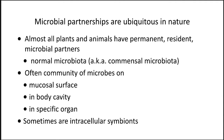Microbial partnerships are ubiquitous in nature. Almost all plants and animals have permanent resident microbial partners. We call this the normal microbiota, but you may also hear the term commensal microbiota. I think normal microbiota is better because commensal implies that there's no benefit to the host, and that's certainly not true. Often, the community of microbes will be found on mucosal surfaces, in body cavities, but can also be found in specific organs, and sometimes they are intracellular symbionts.